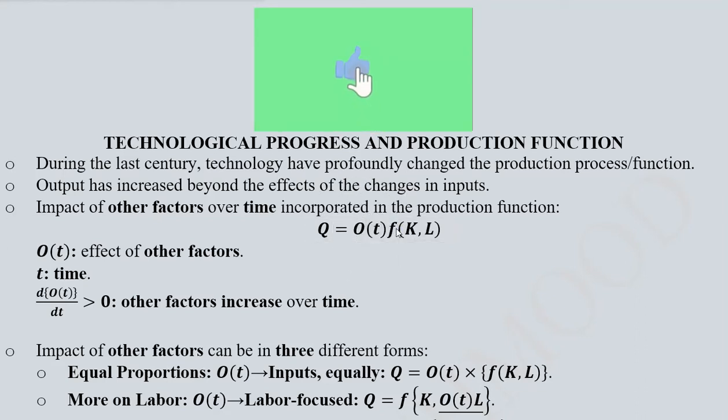The function of capital and labour is something that we have seen before in production functions, but this is something that is other factors that happen over time or improve over time. They are usually considered as the technological progress.